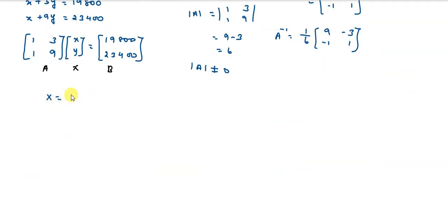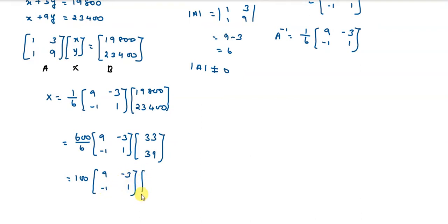Now X equals A inverse B. The constant matrix B equals [19,800; 23,400]. This equals 600 times [33; 39].